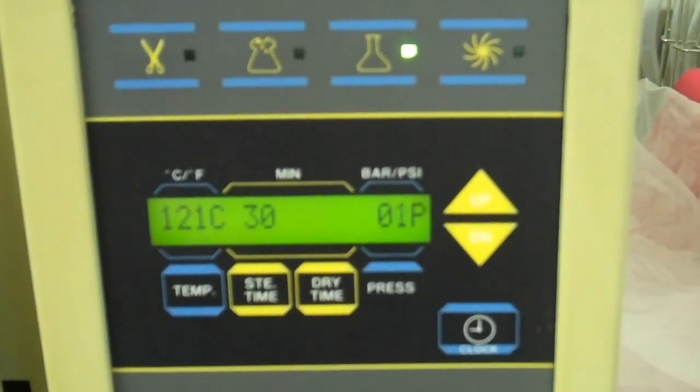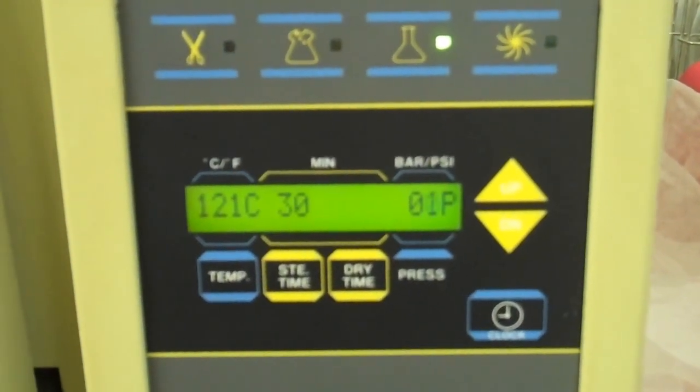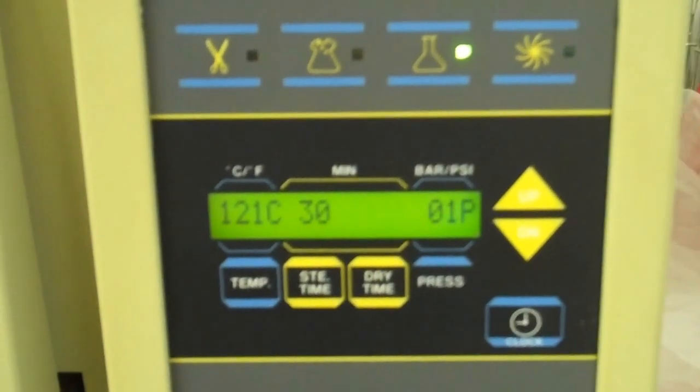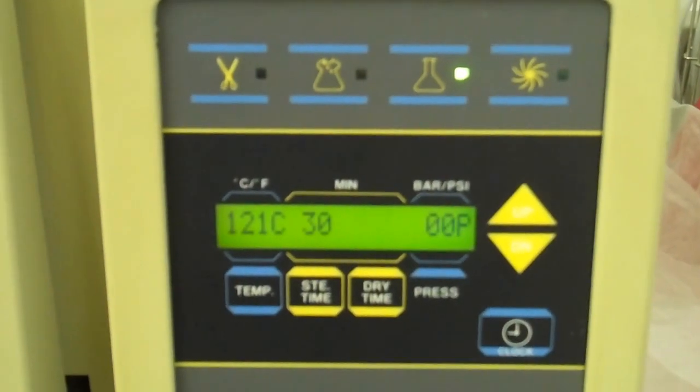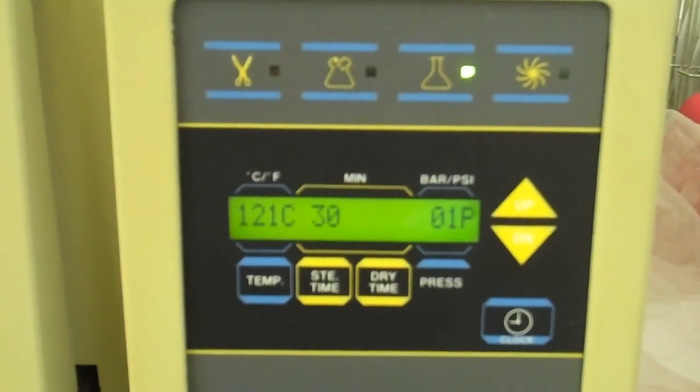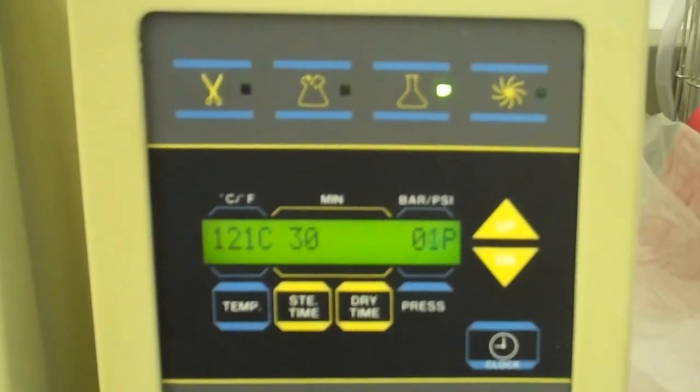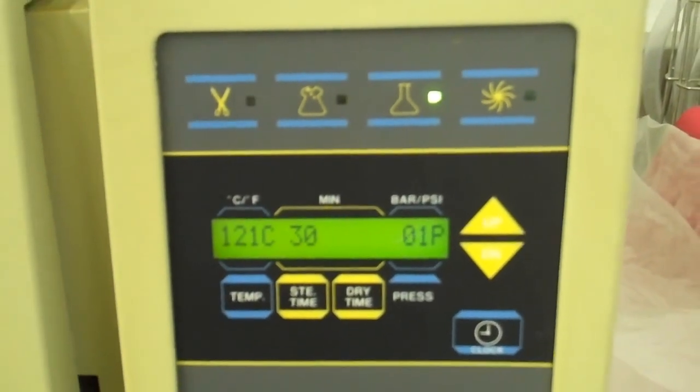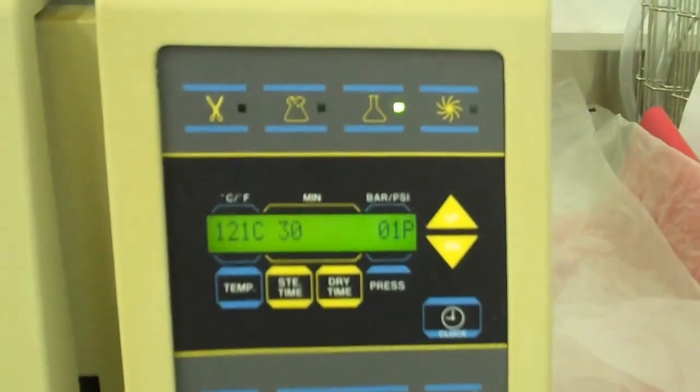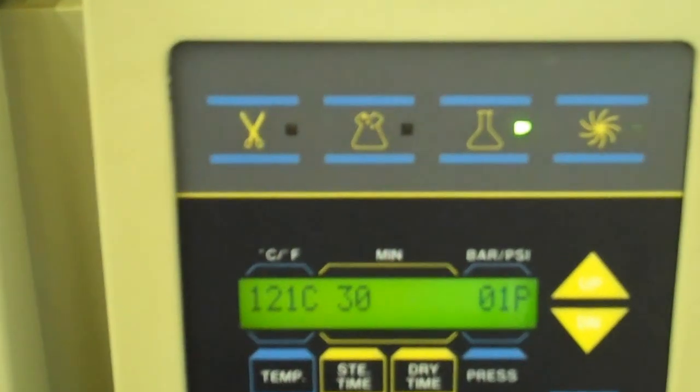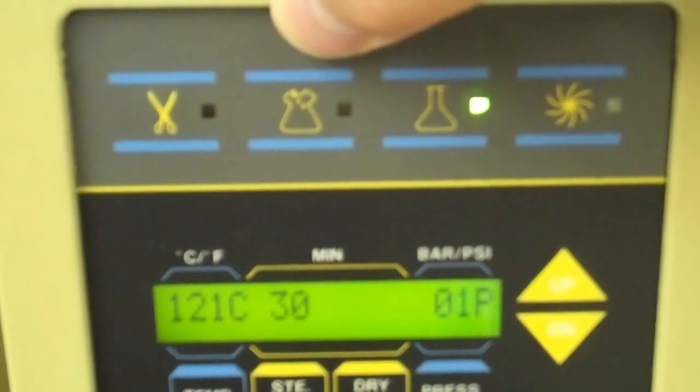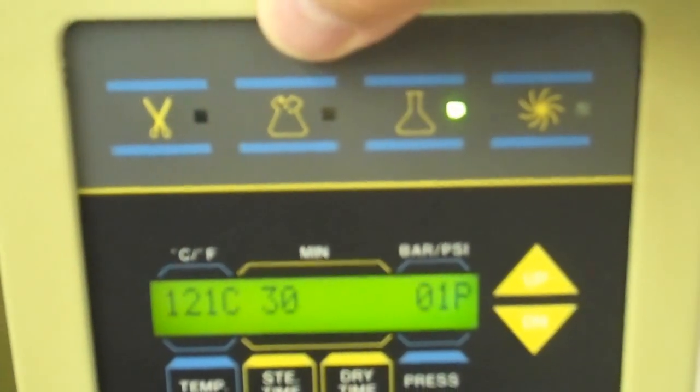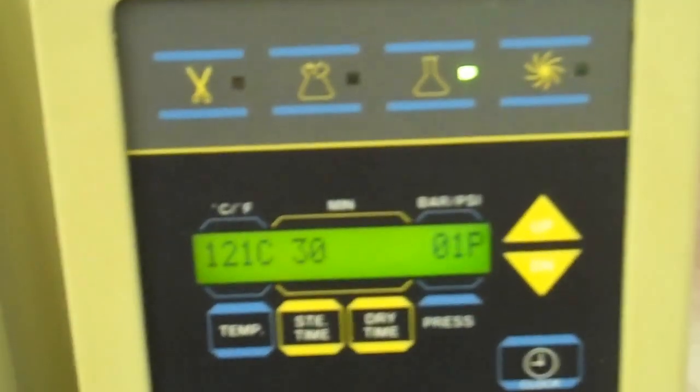Then it will start counting down the 30 minutes, so you're assured that whatever you place in there is going to get cooked for 30 minutes at 121°C at about 15 pounds pressure. This can also be used for just instruments only and it can be used for bio waste.